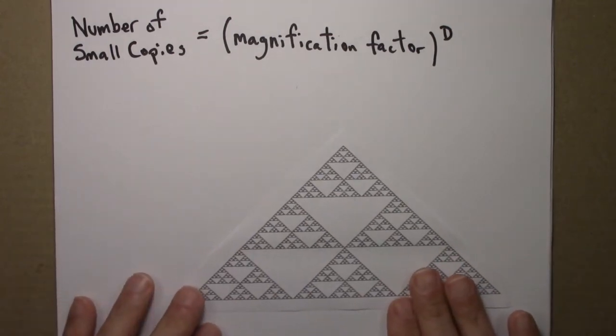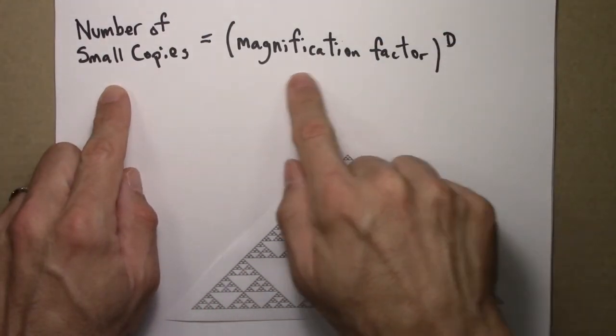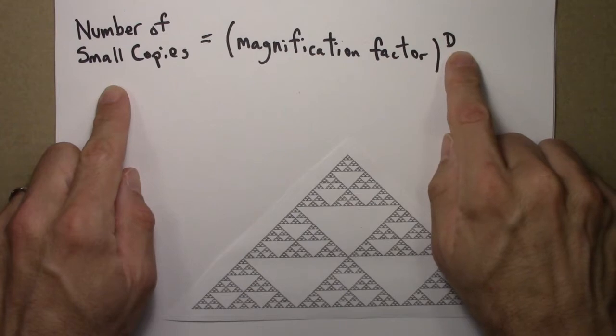Alright, so what's its dimension? Well, we use a familiar formula. Number of small copies equals magnification factor raised to the dimension D.